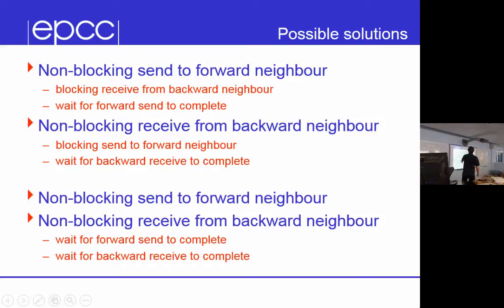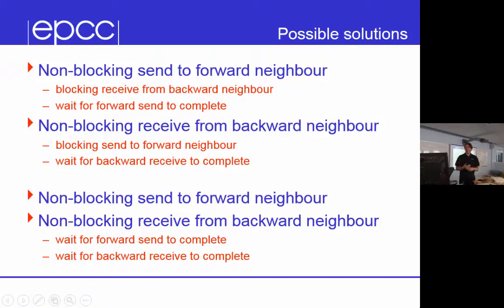This is a case where you could use MPI_Waitall. You stick all the requests in an array of two and rather than waiting on them individually, you say: I want the outgoing message to go and the incoming message to arrive — wait for them both to complete, then carry on. Or you can wait for them individually — you might wait for the receive to complete first so you can update your total, then wait for the send.